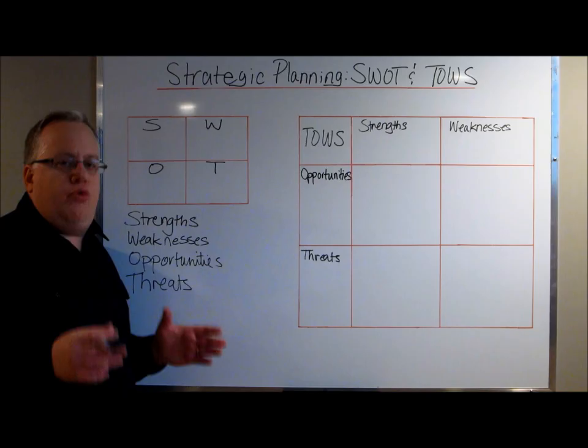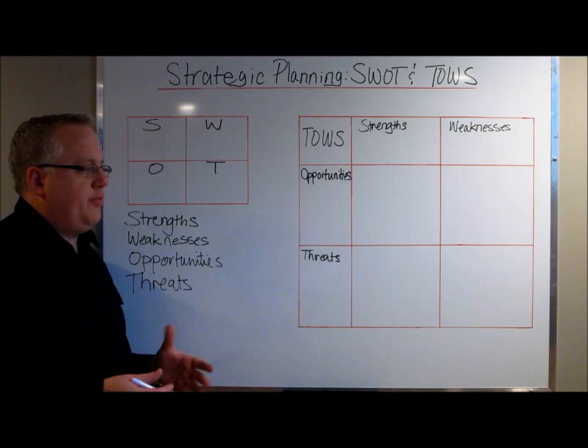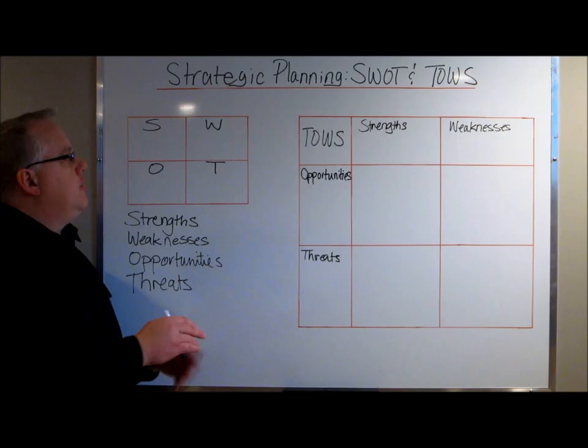Hi guys, Ian Johnson from driversuccess.com. Today we're going to talk about two very simple and straightforward strategic planning tools that you can use: the SWOT and the TOES analysis. Everybody is very familiar with the SWOT analysis — it's a very simple strategic planning tool and a fantastic brainstorming tool.